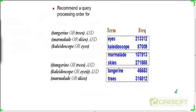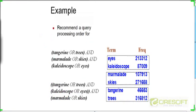So here is an exercise. Can you recommend a query processing order for this particular query? Tangerine OR trees ANDed with marmalade OR skies ANDed with kaleidoscope OR eyes, and these are the document frequencies of each of the six terms.